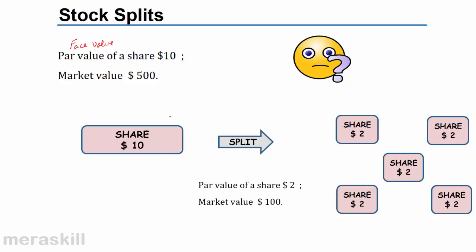The $10 share has been split into 5 shares of $2 each. The par value, the face value, has become $2. That's how the company has split. Automatically, the number of shares in the market has grown 5 times. But the market value of each share will also come down by 5.